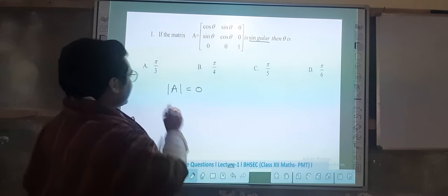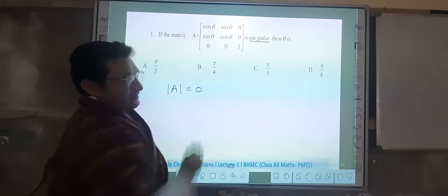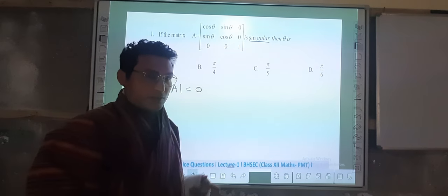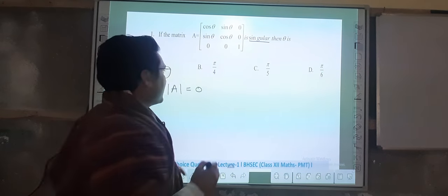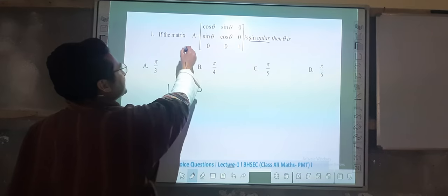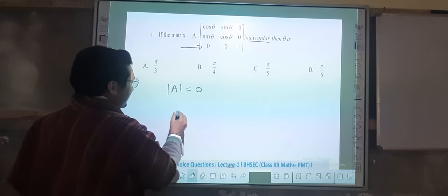So when we find the determinant we have to look at the row or column which has a maximum zero. So we have to expand along that row or column. Let me expand along row three.